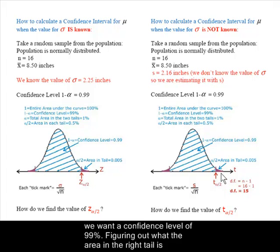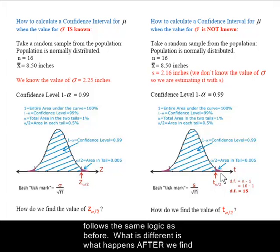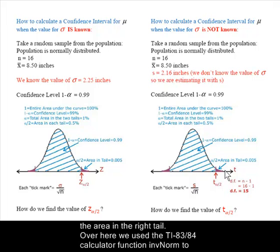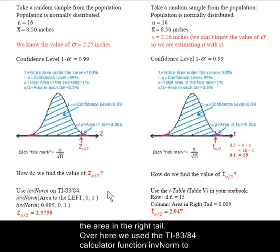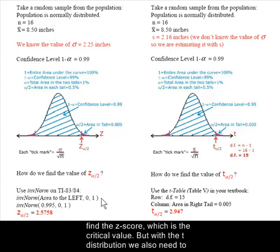Figuring out what the area in the right tail is follows the same logic as before. What is different is what happens after we find the area in the right tail. With the T distribution, we use the TI-83/84 calculator function inverse norm to find the Z score, which is the critical value.